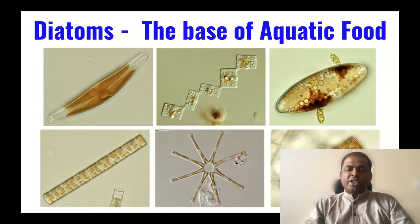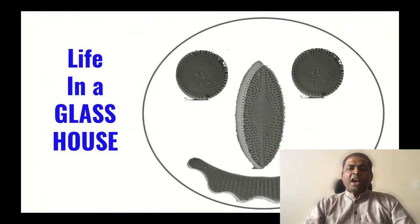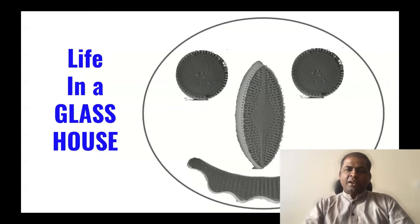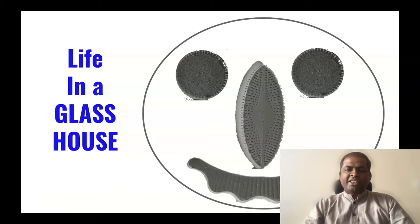Diatoms are the base of aquatic food chains. They occur as single cells or colonies in different aquatic environments and are the primary producers in any given aquatic ecosystem — all insects and small fishes eat diatoms and depend on them for food. One special feature of diatoms is that they are made up of silica, which is why diatoms are often called life in a glass house — the entire cell is inside this glass house.